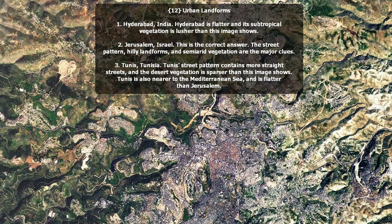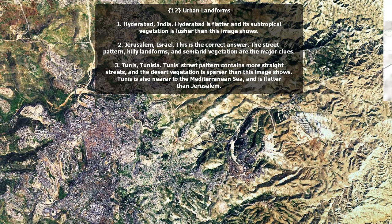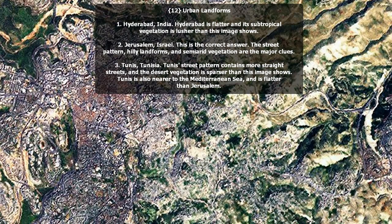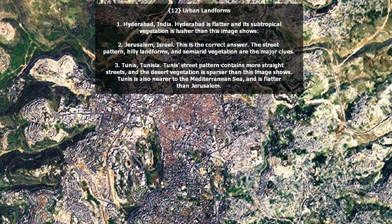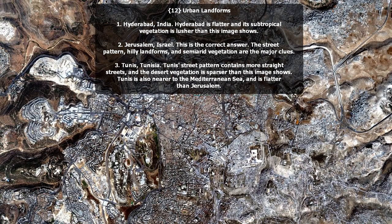Urban landforms. Hyderabad — it's flatter than this. Tunis has water close by and some more straight streets and lighter buildings in general, and the desert vegetation is sparser. So this is Jerusalem, Israel. The street pattern, hilly landforms, and semi-arid vegetation are the major clues.